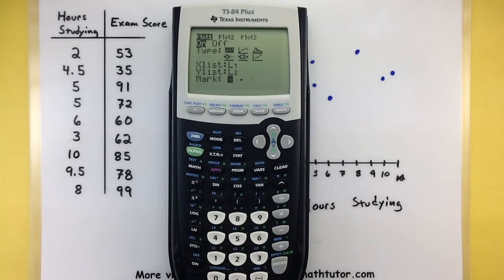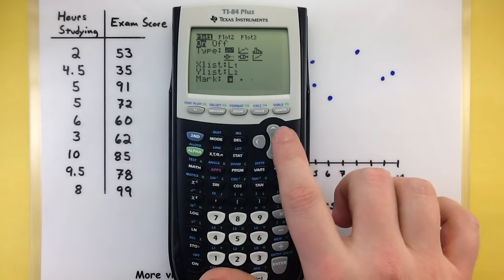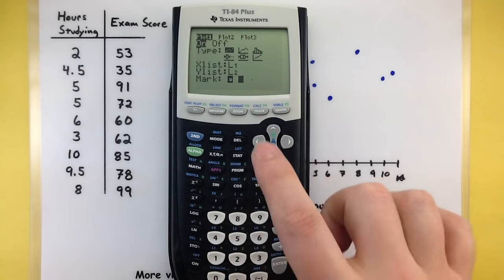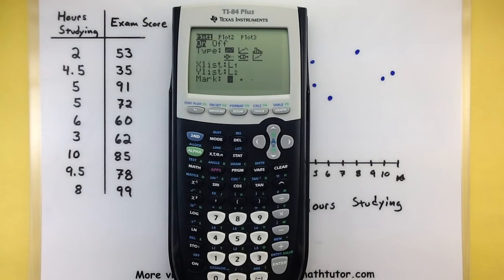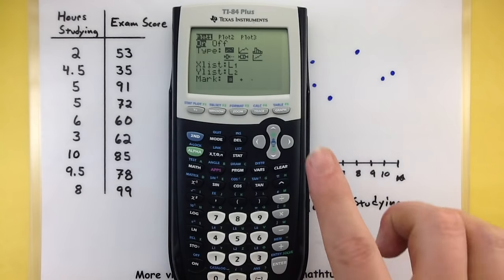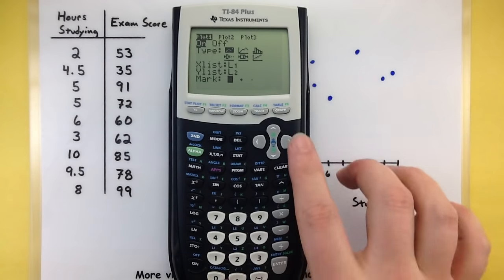And now we need to choose what symbol we want to use for these data points. The first one is kind of a box-looking thing, but we got a plus symbol. We got a little dot. I like my dots nice and big, so I'm going to use that first one, the box. Now that we have all of that set up, let's go ahead and press our graph button and take a look to see what it looks like.